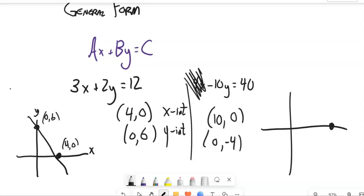So if I sketch that graph, 10, 0, we could say it's about here. 0, negative 4, maybe about here. Straight line through those, and I graphed them. General form is really good for finding x and y-intercepts. Again, x-intercepts happen when y is 0, y-intercepts happen when x is 0.